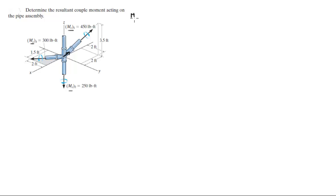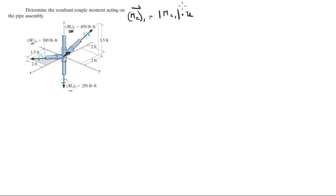So for example, let's take this moment right here — MC1. They give you the magnitude which is 450, so the Cartesian vector form is given by that magnitude MC1 times a unit vector aiming in that direction — let's call it unit vector 1.